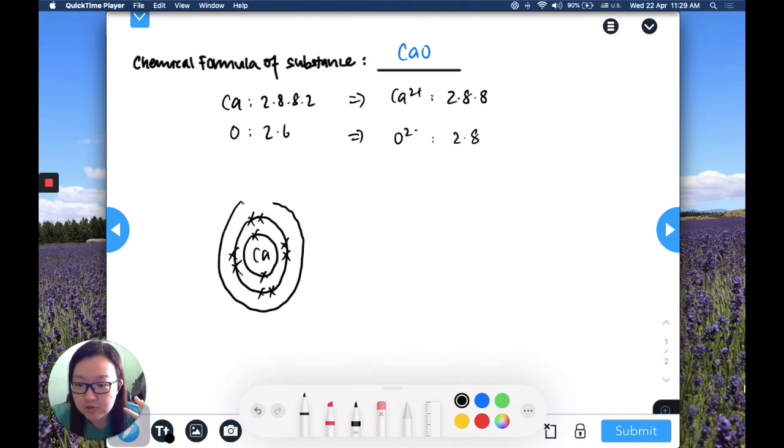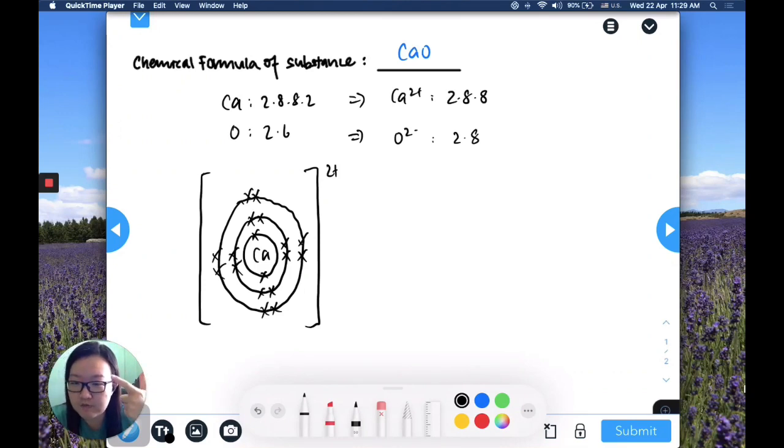so in this case calcium. We will draw 2.8.8, so there are three electron shells and then you fill it all up because it has already formed the stable cation. Draw in the square bracket and then remember to put the correct charge, in this case it's 2+.